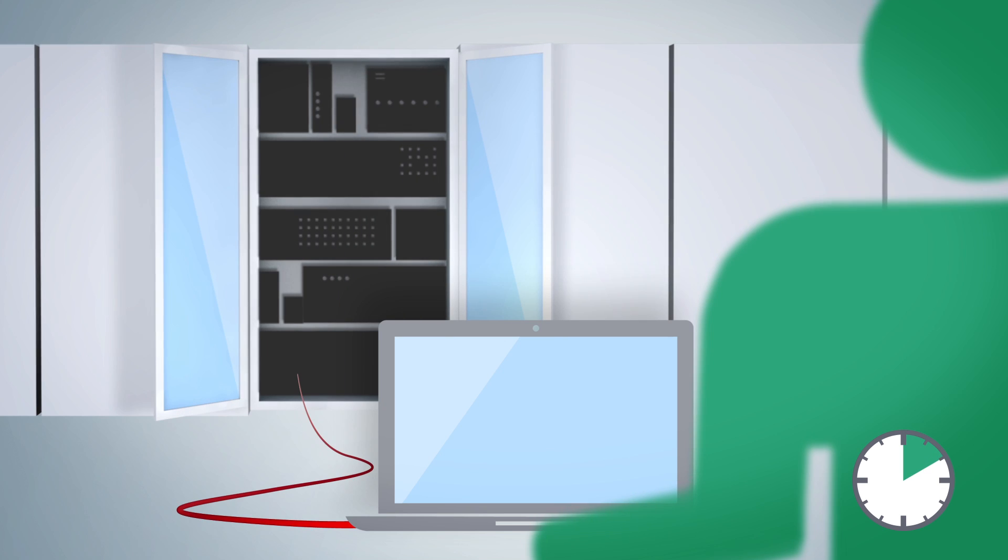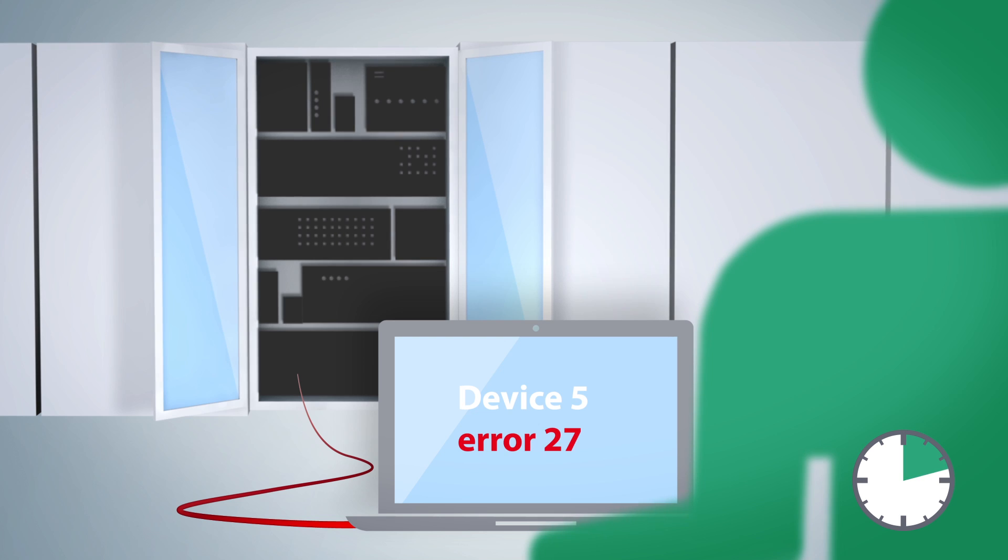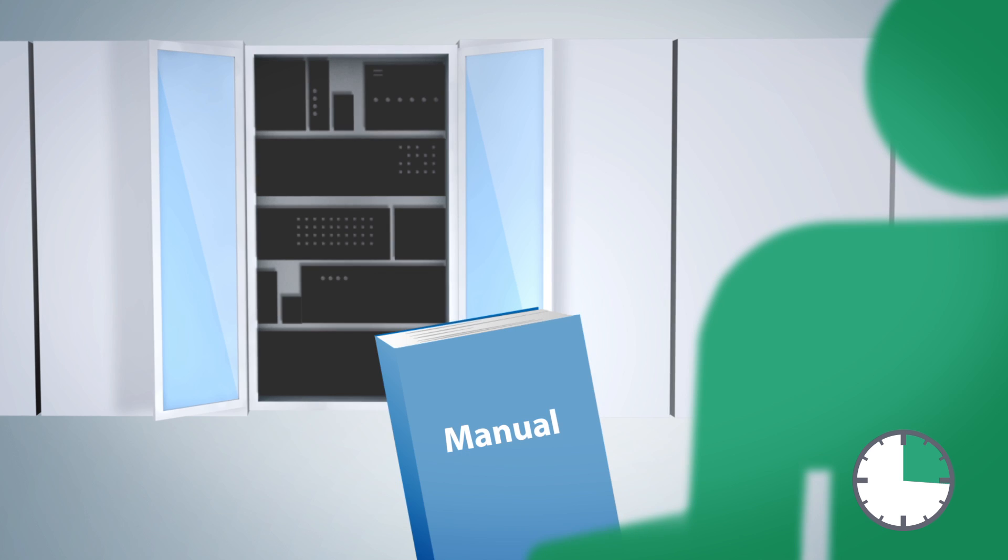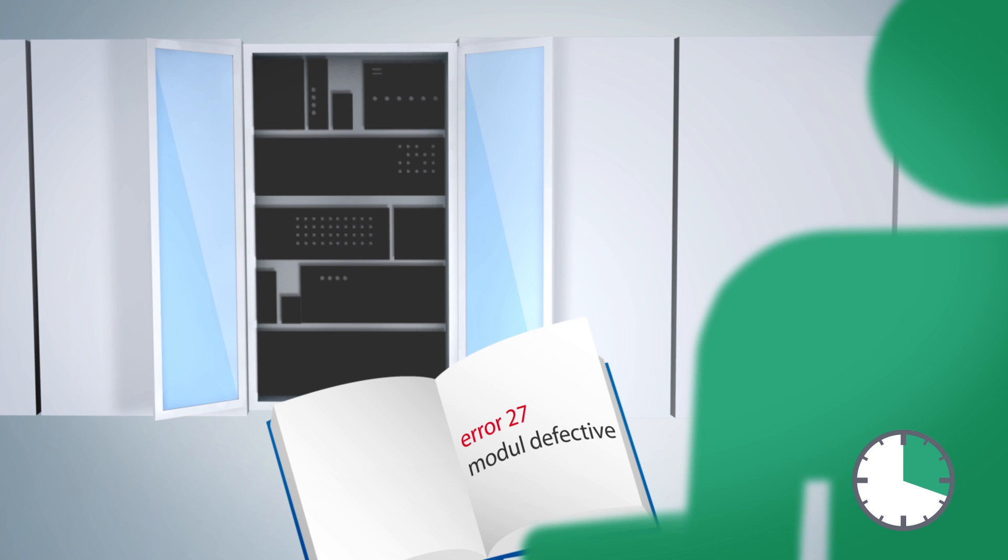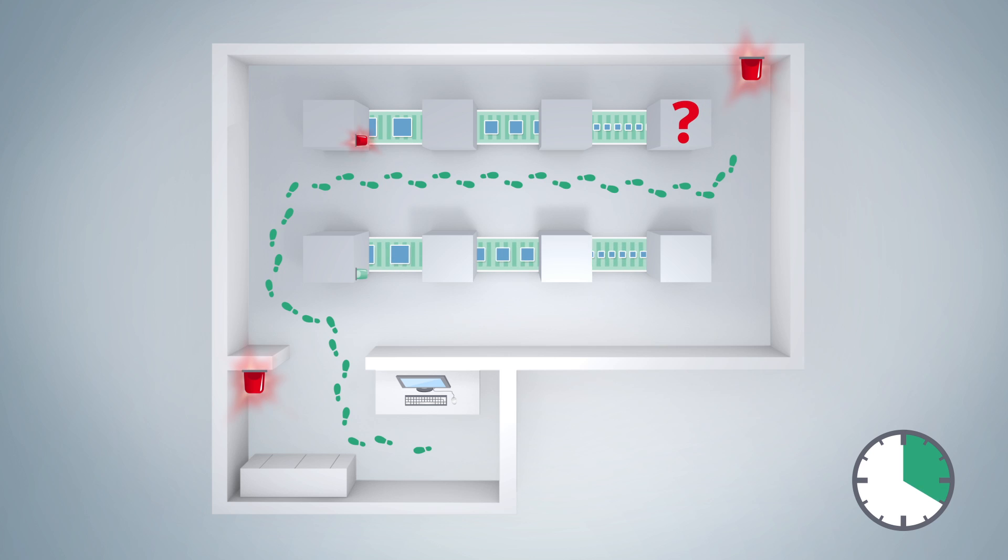To read out the error message, you connect the PC to the machine. But what does device 5 error 27 mean? The cause is listed in the manual from the manufacturer. The module is defective. But where is device 5?